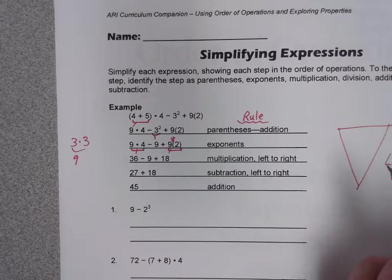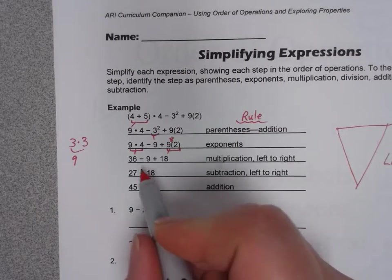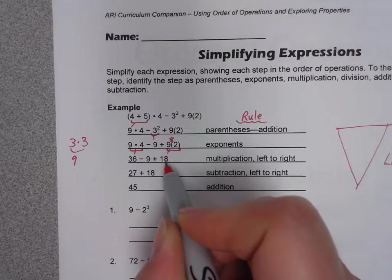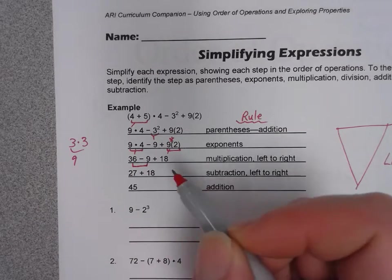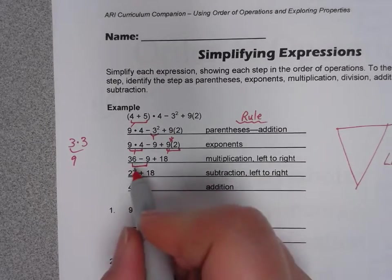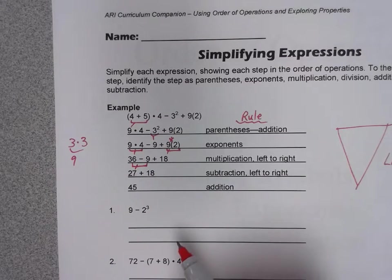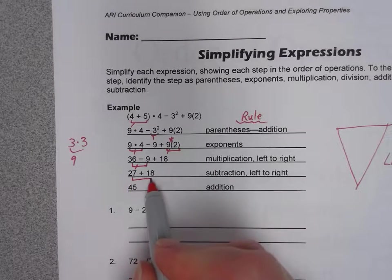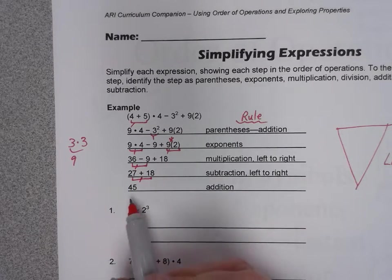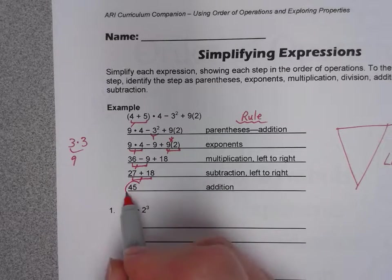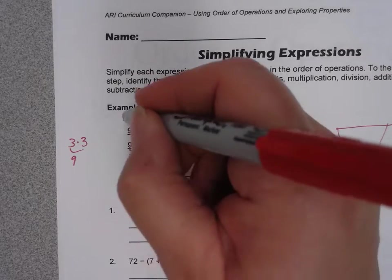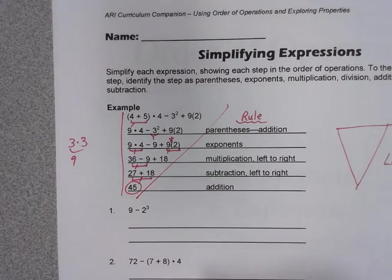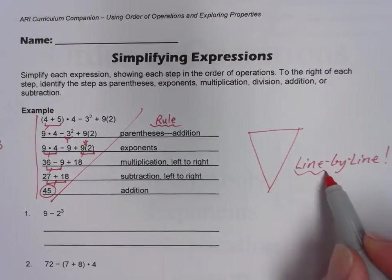I don't have any division, so I don't have to worry about that. Multiplication and division — check, those are done. How about addition or subtraction? There's subtraction and there's addition. The rule says go in order from left to right. The first thing I see is subtraction: 36 take away 9 is 27, and we bring down the plus 18. The last step is addition: 27 plus 18 gives us 45. Circle your final answer — it looks like pepperoni. You can see this idea of a pizza slice or inverted triangle from the line-by-line work.